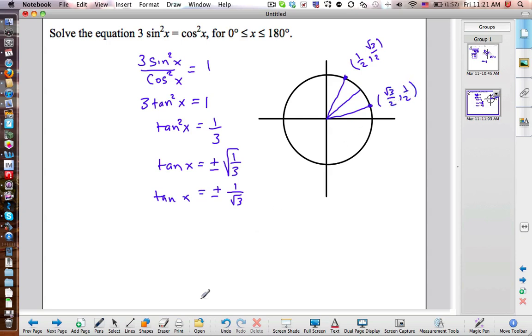So if I want to find the tangent at these points, I can say, okay, root 3 over 2, sine, divide, cosine. So the y value, root 3 over 2, divide the x value, divide 1 half. You can see that these 2's will cancel. I'm left with root 3 over 1, which is root 3.